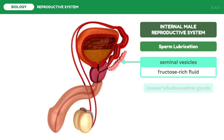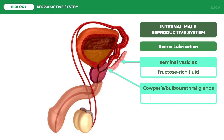Second, the Cowper's gland or bulbourethral glands are small pea-sized glands located near the base of the penis. These glands produce a mucus-like alkaline fluid which neutralizes the acidic nature of the urethra due to urine and the acidic nature of the female reproductive tract. Aside from this, this fluid also provides some lubrication to the tip of the penis during sexual intercourse.